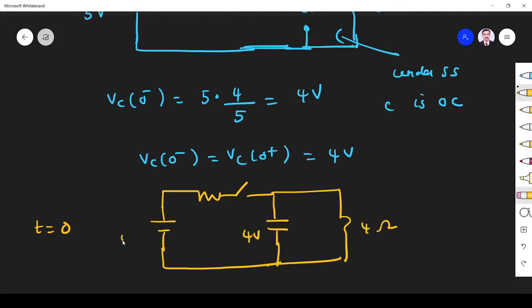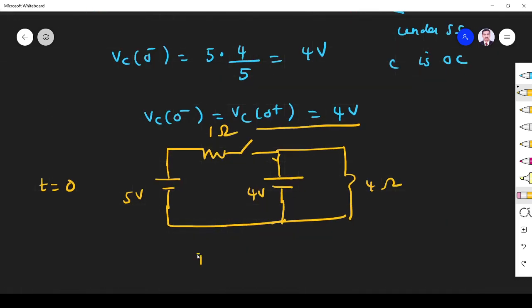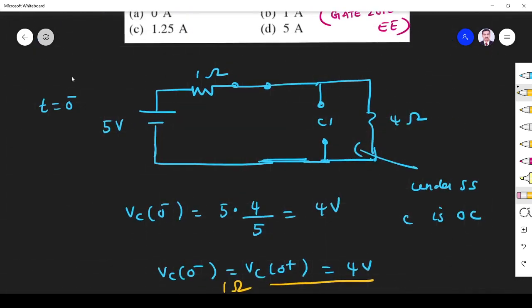This is 5 volt, this is 1 ohm. Why it is 4 volt? Because we know VC(0+), voltage across capacitor at 0+, is 4 volt. Now what we have to find is the current through this circuit. It is simply I = V/R. V is 4 volt, R is 4 ohm, so it is 1 ampere. So the answer is 1 ampere.